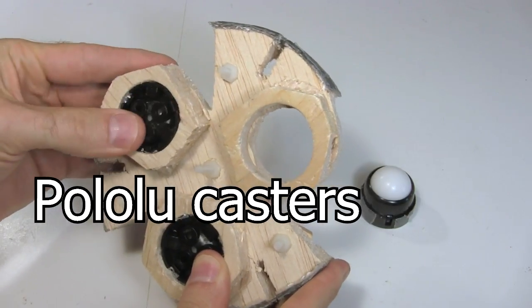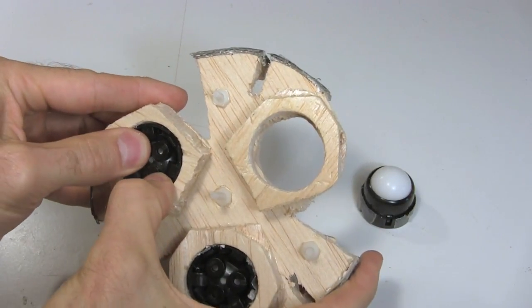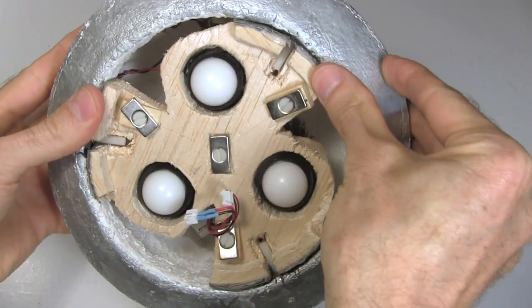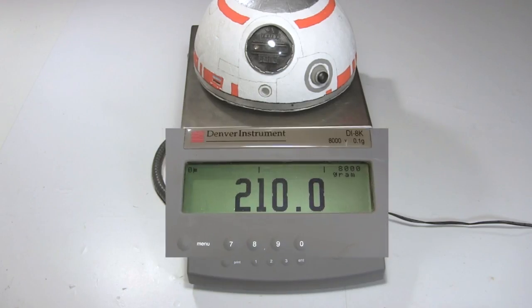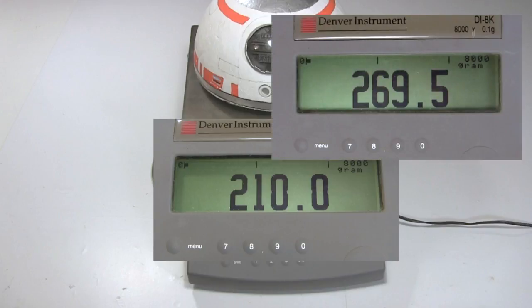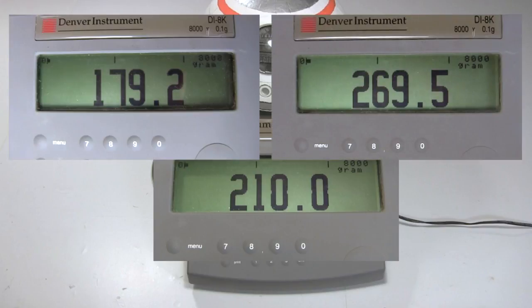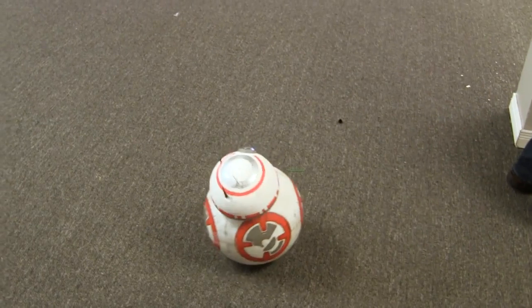The Pololu casters weigh around 16.6 grams each. I put them in place. That's followed by sliding in the head support and putting on the nuts. The whole thing now weighs 210 grams, much better than the 269 grams I started with, so not quite the 179 gram target, but it's a huge improvement.